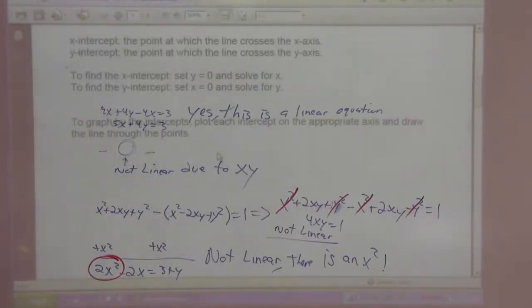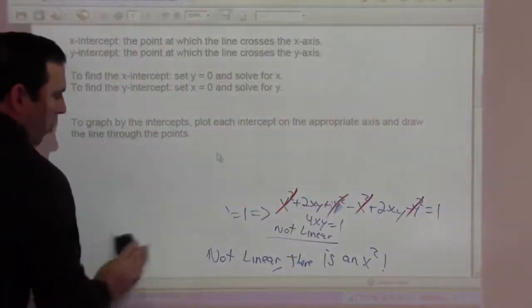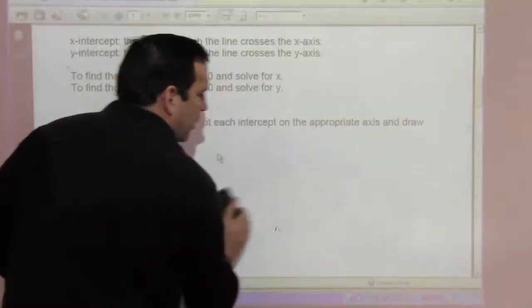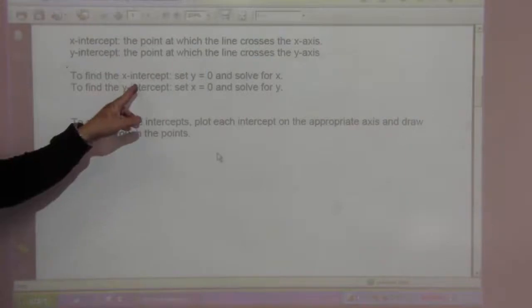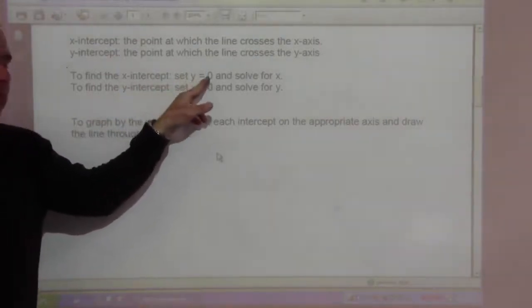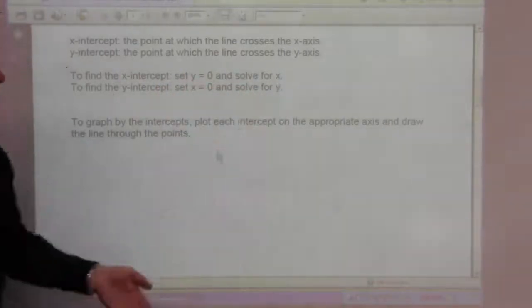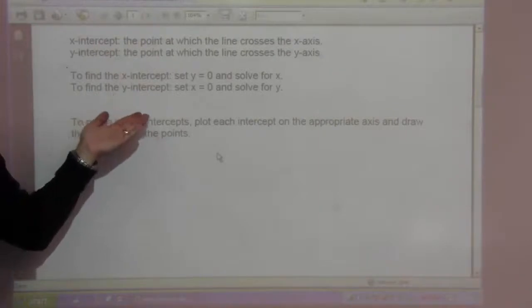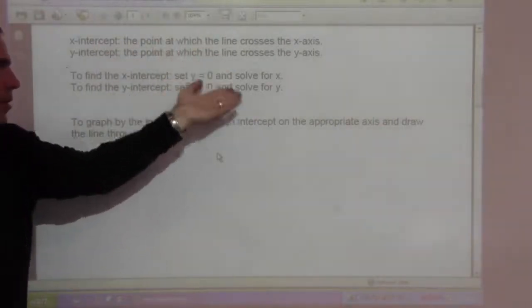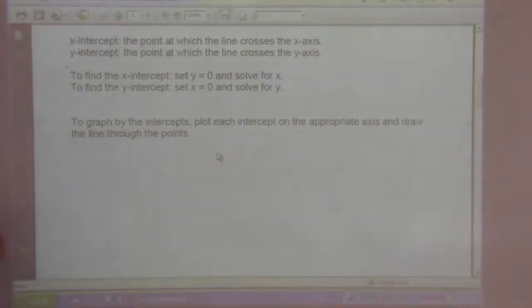The x-intercept is the point at which the line crosses the x-axis, whereas the y-intercept is the point where the line crosses the y-axis. To find the x-intercept, set y equal to 0, because that's the value of y on the x-axis. To find the y-intercept, set x equal to 0, and then solve for y.